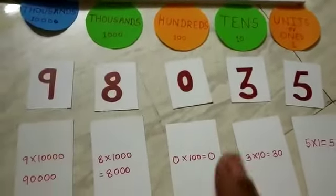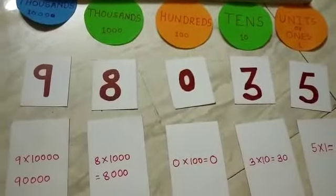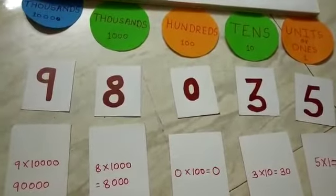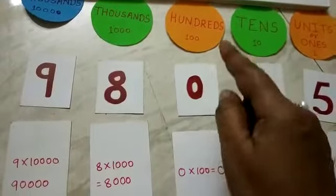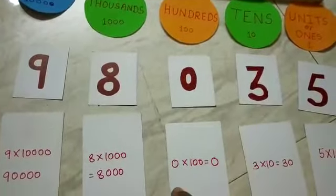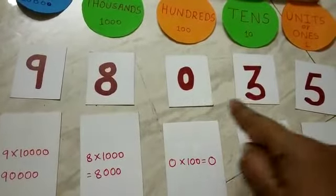I have made little change in this number. In hundreds house I have brought 0, so what will be the value of this house? So any number when you multiply with 0, the answer comes 0. So in any place if there is 0, its value will be 0.